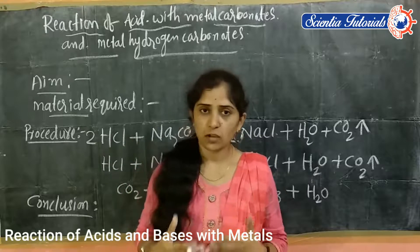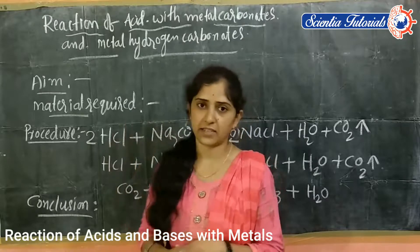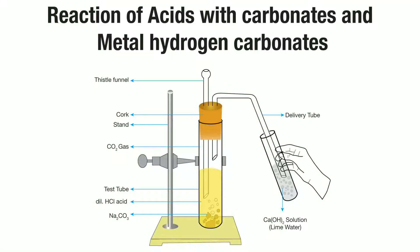We should also take a delivery tube and thistle funnel for this activity. For the procedure, we take the test tube and fix it to the retort stand. Then we add hydrochloric acid in the test tube and add sodium carbonate. After adding, we close with a rubber stopper. Through the rubber stopper, we insert a thistle funnel and a delivery tube. The other end of the delivery tube is inserted into another test tube which contains lime water — nothing but calcium hydroxide.